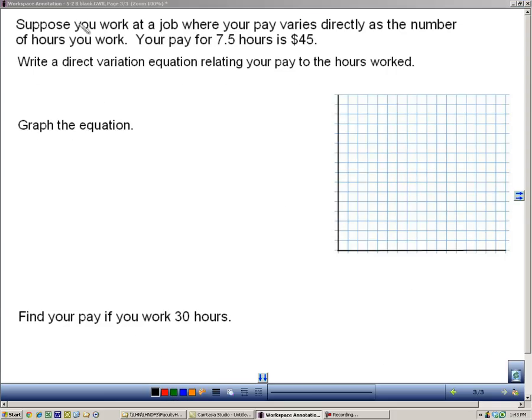Here's another direct variation. It says suppose you work at a job where your pay varies directly as the number of hours you work. So that sentence should lead us to a direct variation where it says the pay, we'll call that p, varies directly as the number of hours. So p equals kh, with k being the constant of variation.